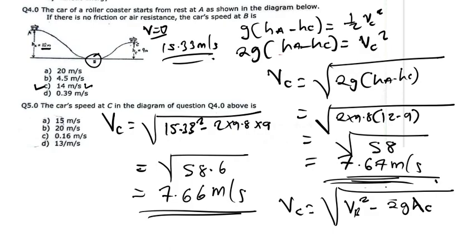So both approaches give the same result. There was an error in question five — there was no correct answer provided. For question four, the expected answer was 15 m/s but the closest option was 14 m/s, so C was marked correct. For question five, since no answer is close to 7.67, it was likely a free mark. That's the basic idea behind this type of question.